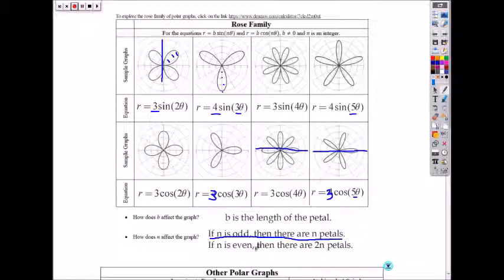But if you have even number n, so here's even number two, then you double it. It's two times n petals. So one, two, three, four. Then you have one, two, three, four, five, six, seven, eight petals.